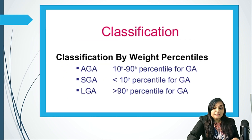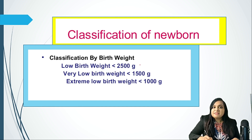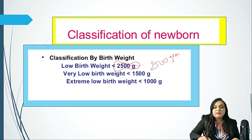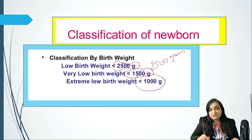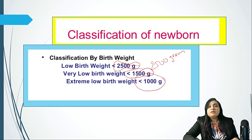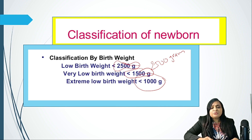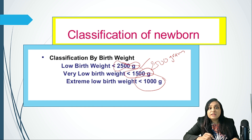Another very important classification is as per birth weight. Low birth weight babies are those with a birth weight less than 2.5 kg or 2500 grams. When the birth weight is less than 1500 grams, it is called very low birth weight. And when the birth weight is below 1 kg — that is 1000 grams — it is called extremely low birth weight.